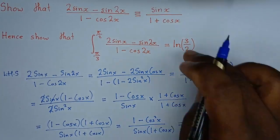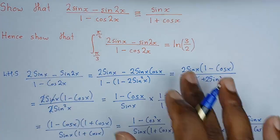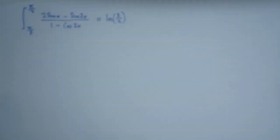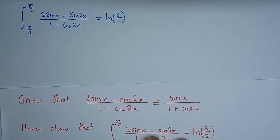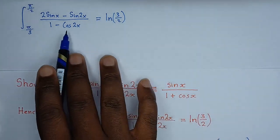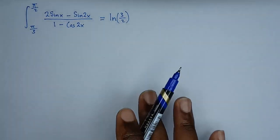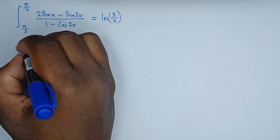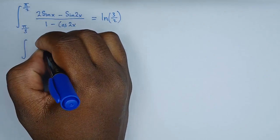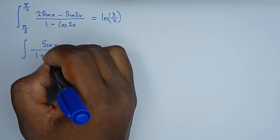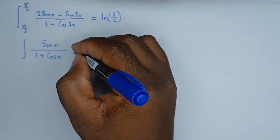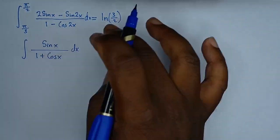That completes the first part — proving the identity. Now let's go into the second part where we evaluate the definite integral. Because we proved that the original expression equals sin x / (1 + cos x), we substitute this into the integral. The integral now becomes the integral of sin x / (1 + cos x), with limits from π/3 to π/2.